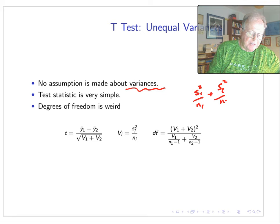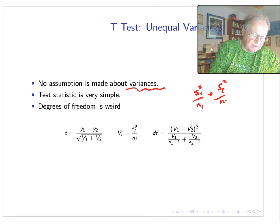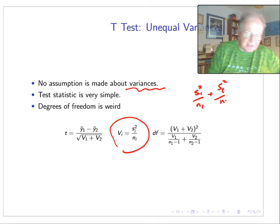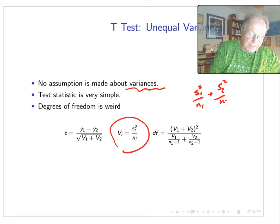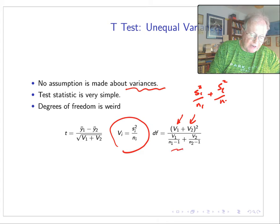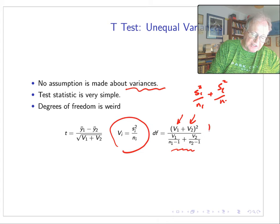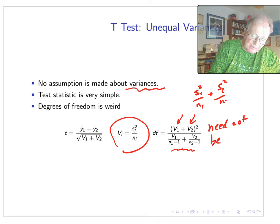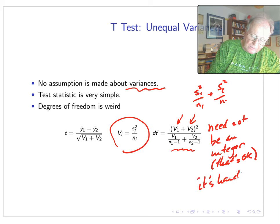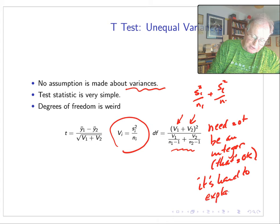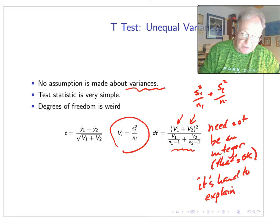Our test statistic looks like this: difference of the variances is the square root of the two contributions to the standard error, and so we just see that that's the respective variance divided by the sample size. Here's the degree of freedom calculation, where it gets crazy. So we take each of those variance components, add them and square the result, and then divide it by this oddball fraction down here. Now what's surprising about this is this need not be an integer. Okay, the t distribution doesn't care—that's okay—but it's hard to explain in terms of degrees of freedom. Don't ask me, it would take us two hours to figure out how that works.